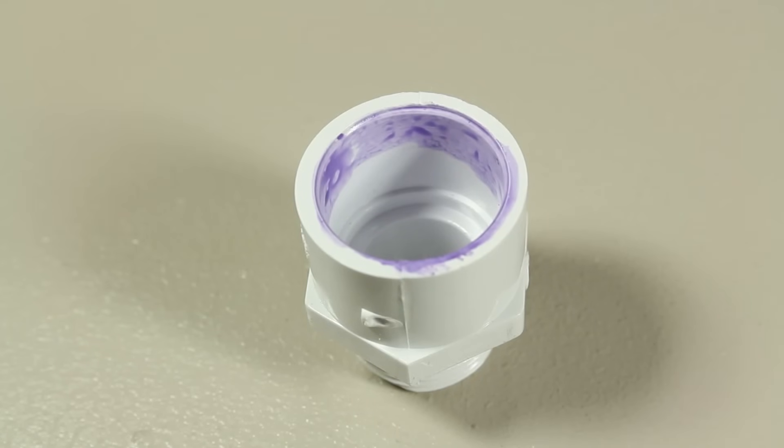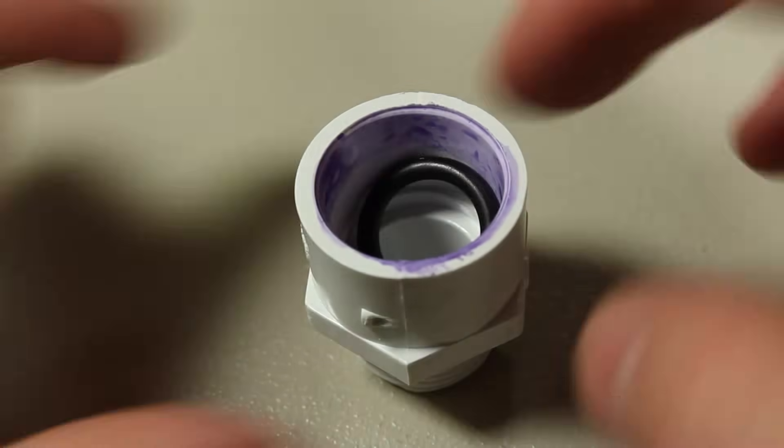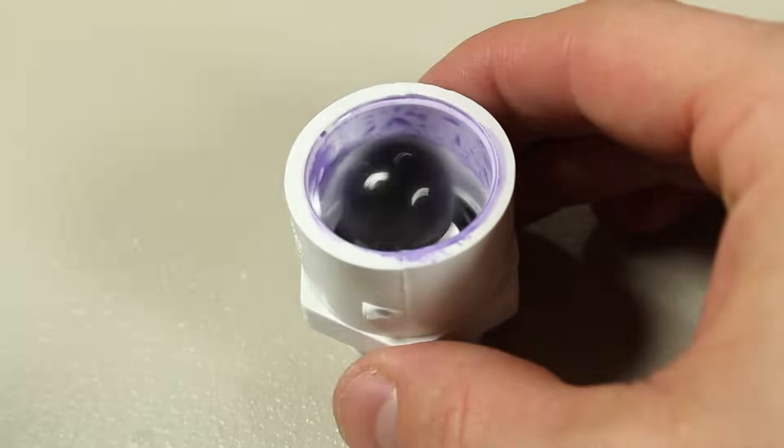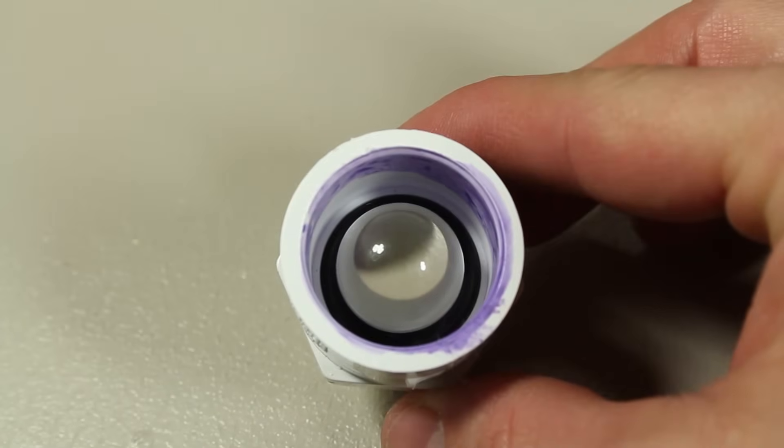The next step is to prime our connections and place the o-ring in place inside the adapter. Now let's drop in the ball and double check that everything seals properly.